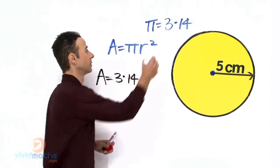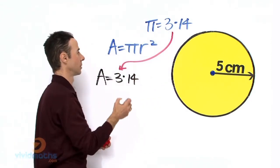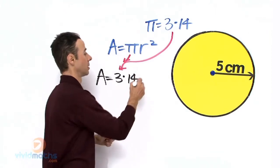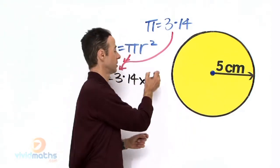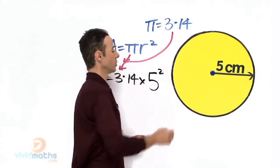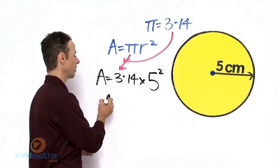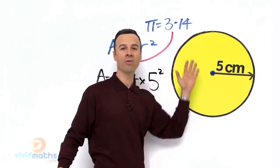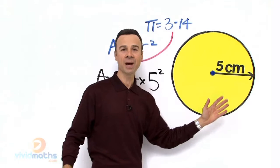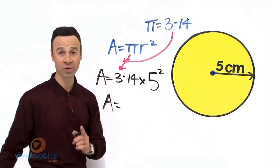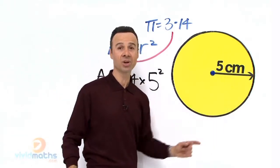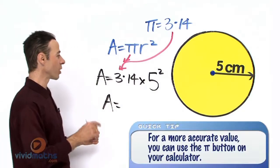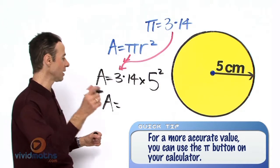So the area, the complete space within this vivid yellow circle, is a total of... and the units are in centimeters, so we are going to get an answer in centimeters squared. The total area in your calculator, 3.14 times 5 squared, is?